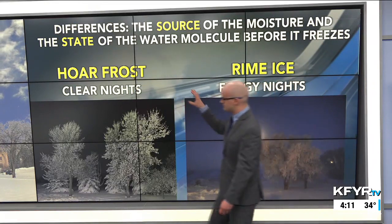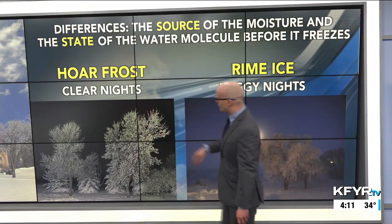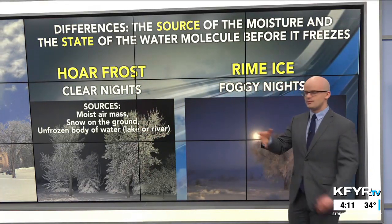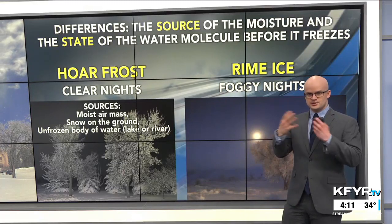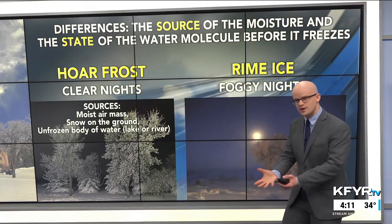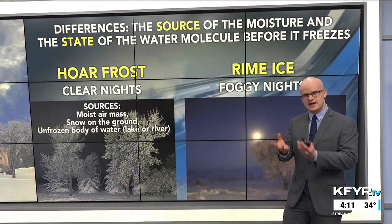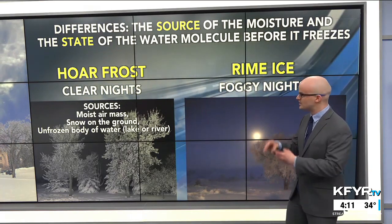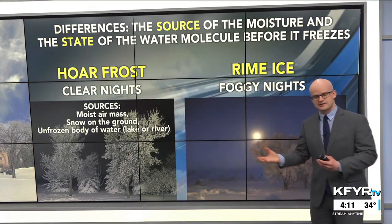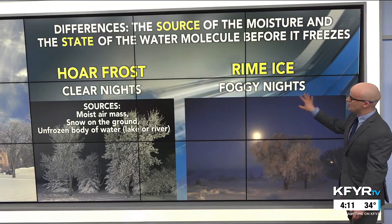With hoarfrost, you need clear nights and calm winds, with moisture sources coming from either a moist air mass moving into the region, snow on the ground that can evaporate and make the atmosphere more moist, or an unfrozen body of water like a lake or river adding more moisture into the atmosphere near the surface.